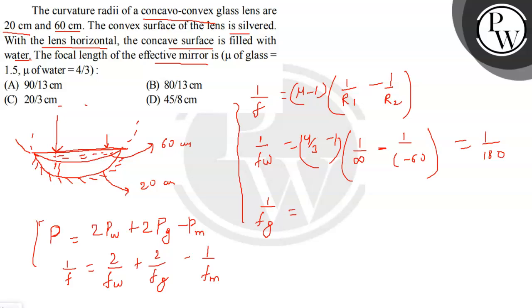So for glass the refractive index is 1.5 minus 1 into 1 upon r1. R1 will be minus 60 and minus 1 upon r2, R2 will be minus 20. And for this it will come out to be 1 upon 60 and for mirror we can write it as